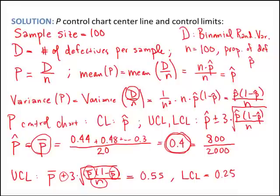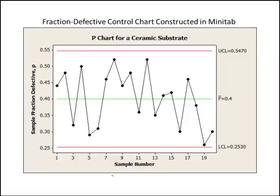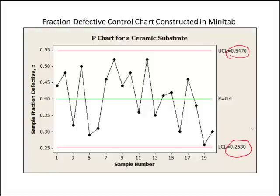I went ahead and graphed the p chart in Minitab. This is the fraction defective control chart. Sample 1 had 44 defectives out of 100, sample 2 had 48, sample 3 had 32, and sample 4 had 50. P-bar, the average of all the proportion defectives, is 0.4. The upper control limit is 0.5470 and the lower is 0.2530. Looking for out-of-control points, none of the samples go beyond the upper or lower control limits, so there are no out-of-control points.